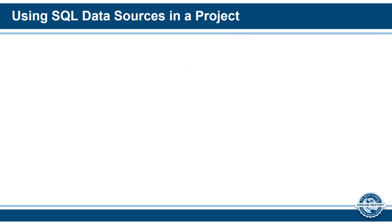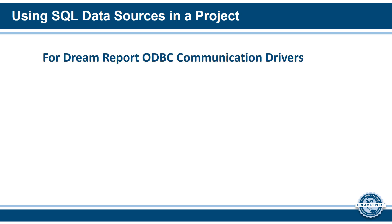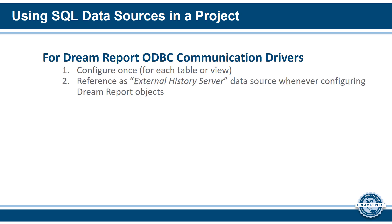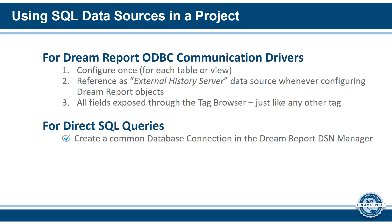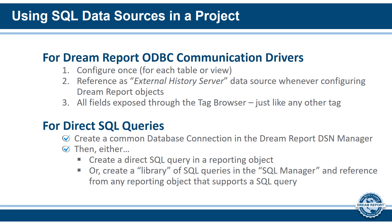Finally, let's look at the basic steps when using either approach. For DreamReport ODBC communication drivers, you first configure the driver once for each database table or view being used. Then, when configuring DreamReport objects, reference the ODBC drivers as an external history server data source, and all fields will be exposed through the tag browser. For direct SQL queries, first create a common database connection in the DreamReport DSN manager. Then either build a direct SQL query or call a stored procedure in each reporting object, or create a library of queries in the DreamReport SQL manager and reference those from any reporting object that supports a SQL query.